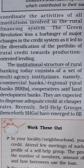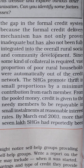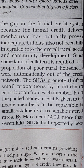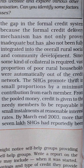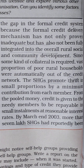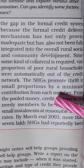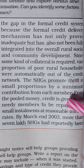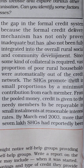They are expected to dispense adequate credit at cheaper rates. Recently, self-help groups, henceforth SHGs, have emerged to fill the gap in the formal credit system because the formal credit delivery mechanism has not only proven inadequate but has also not been fully integrated into the overall rural, social and community development. Since some kind of collateral is required, a vast proportion of poor rural households were automatically out of the credit network. The SHGs promote thrift in small proportions by a minimum contribution from each member; from the pooled money, credit is given to the needy members to be repayable in small installments at reasonable interest rates.